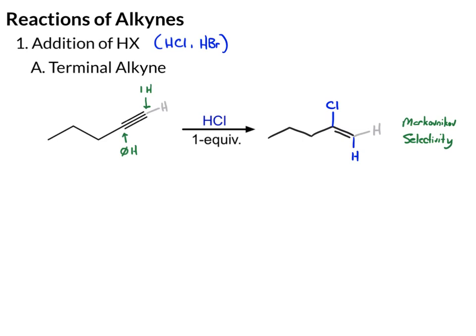Once you've done this, if you want to continue to react, we can add a second equivalent of HCl. That's just going to do a basic alkene reaction you've already learned. If we take this alkene and react it with HCl, this will follow Markovnikov selectivity — putting the new hydrogen on the less substituted side and the second Cl on the more substituted side of the double bond. That adds across the double bond to give us a single bond, keeping our Cl, hydrogen, and hydrogen, with the new Cl added to the more substituted carbon.